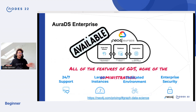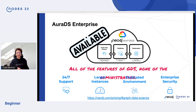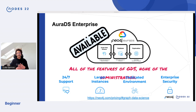And last but not least, AuraDS Enterprise. You get all the features of GDS without the administration hassle. We give you access to 24x7 support as well as larger instances, a dedicated environment, and enterprise security including VPC isolation, VPC Private Service Connect, and VPC Private Service Link.